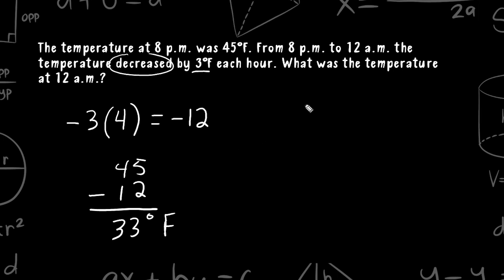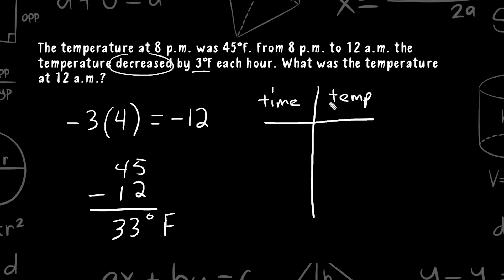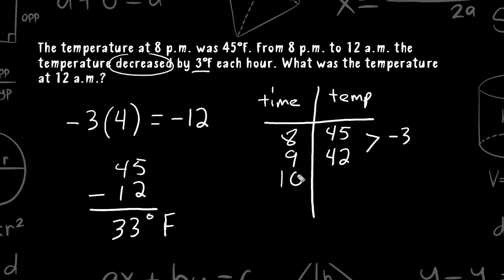Another way that may work for some students is to make a table with time on one side and temperature on the other. At 8 o'clock the temperature was 45 degrees. The temperature decreases 3 degrees each hour: at 9 it's 42 degrees, at 10 it's 39 degrees, at 11 it's 36 degrees, and at 12 o'clock midnight the temperature would be 33 degrees Fahrenheit.